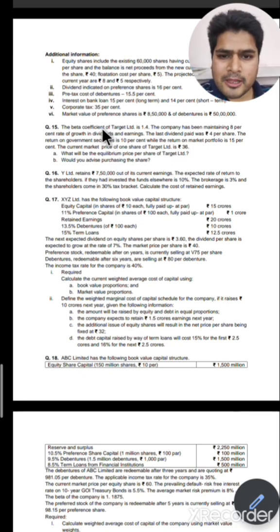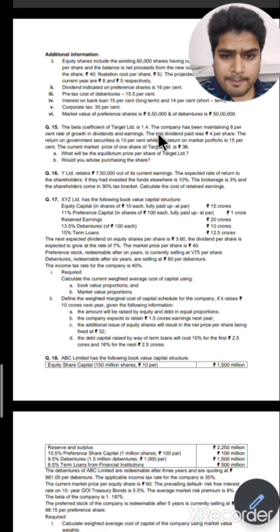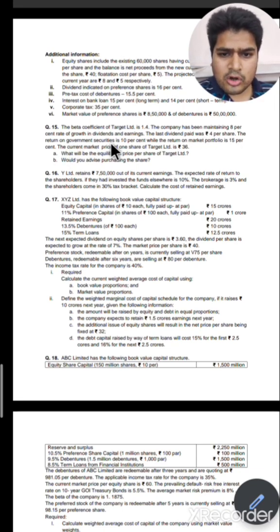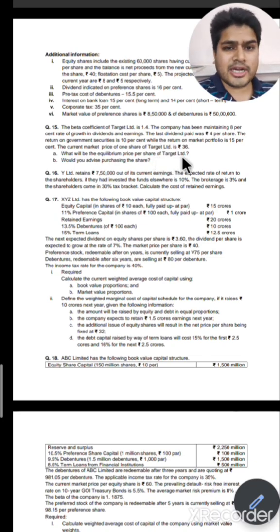Now let us see this question. The beta coefficient has been given as a systematic risk measure. The company has been maintaining 8% rate of growth in dividend and earnings. The last dividend paid was Rs. 4 per share, so D0 is Rs. 4. The return on government security is 10% while the return on market portfolio is 15%. Current market price of one share of Target Limited is Rs. 36. What will be the equilibrium price per share of Target Limited?